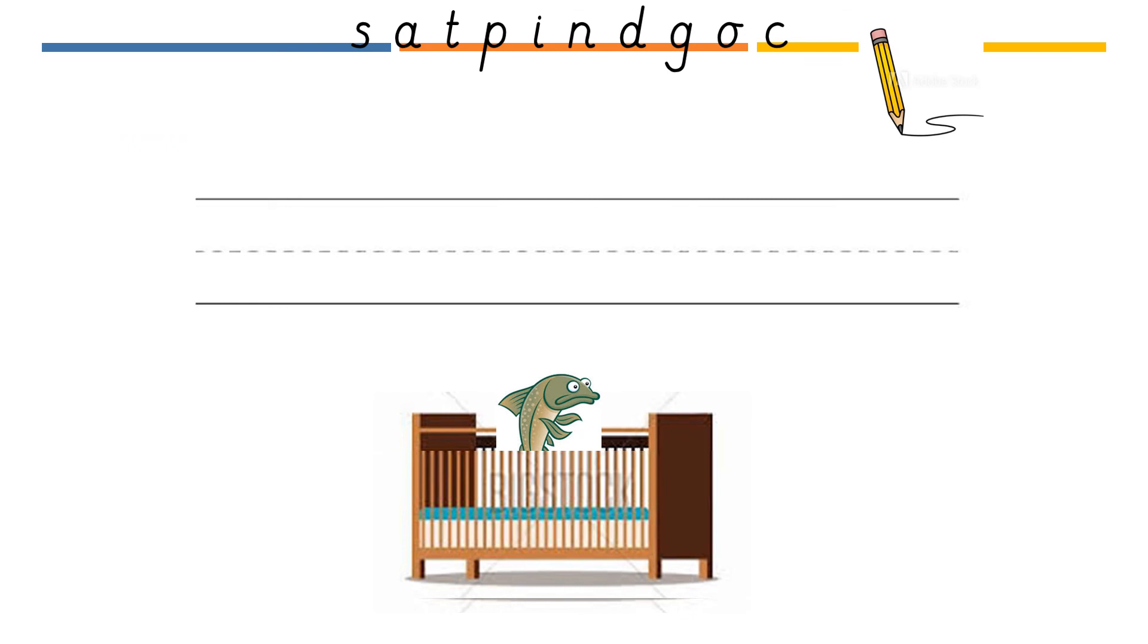We are going to write a caption today. And the caption we are going to write is cod in the cot. This has our common exception word the in the caption. And it has two words with our new sound, C. Repeat after me. Cod in the cot, your turn. My turn. Cod in the cot, your turn.